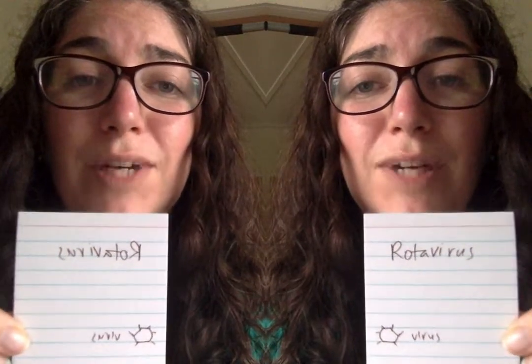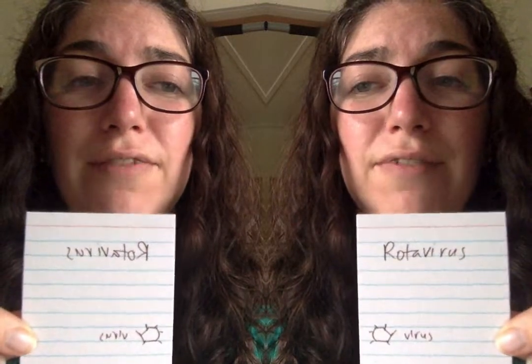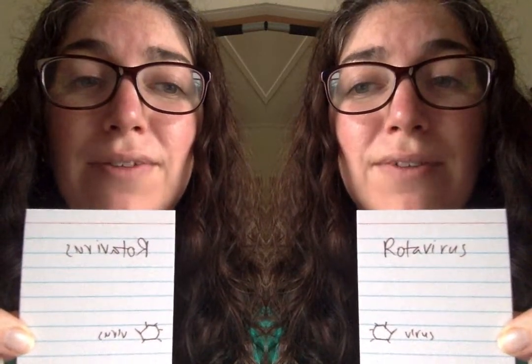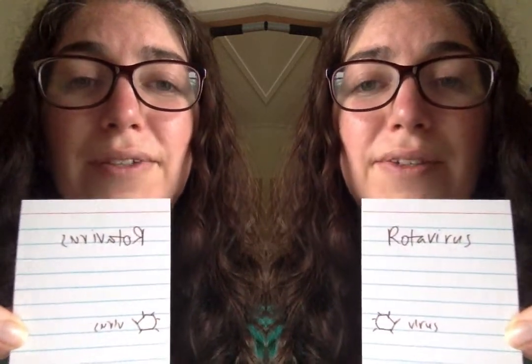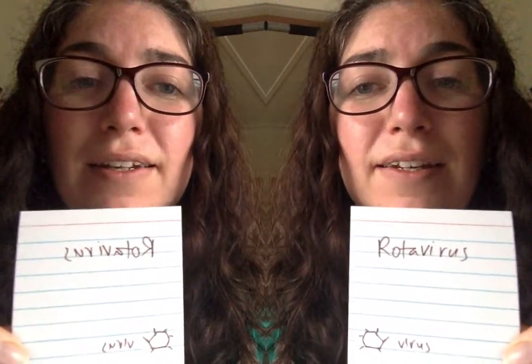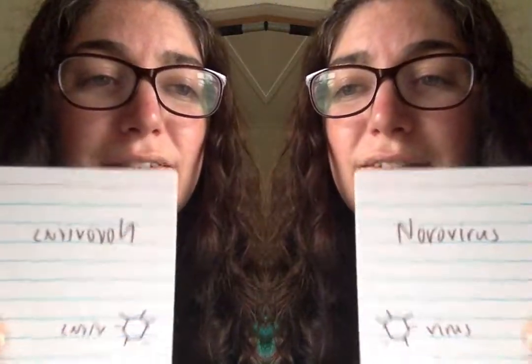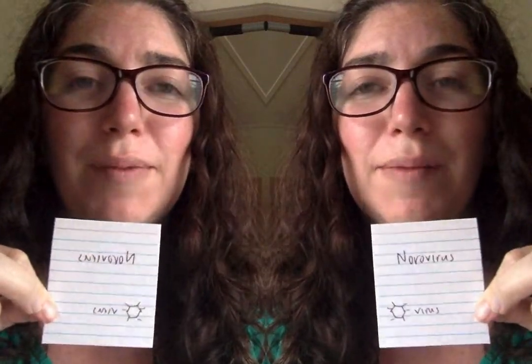Rotavirus causes gastrointestinal disease that's pretty severe in small children. It was a major cause of death in children under five until the vaccine came out in 2006. It's the only oral vaccine that babies get — not a shot — and it is very effective and has vastly reduced the amount of hospitalizations from rotavirus.